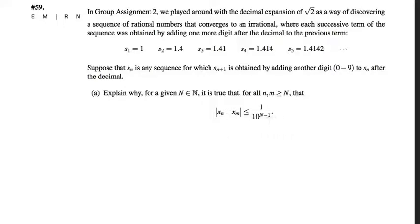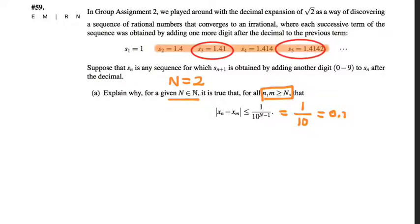So let's just look at an example here. Let's suppose that I want to show that for a given capital N, let's suppose we take N equals 2, or something like that. We want to show then for all n and m that are greater than or equal to 2, so in this example that would be all of the terms in the sequence which come at least after the second one, that the difference between the x_n's and the x_m's is less than or equal to 1 over 10 to the n minus 1. So in this example that would be 1 over 10 to the 1, or 0.1. So the question is sort of how do I know that if I take any one of these two terms and subtract it from any one of these other two terms that the difference is going to be less than or equal to 0.1? What's your argument for that?